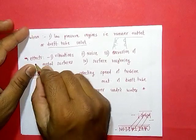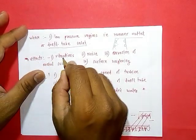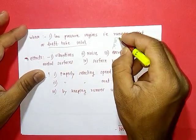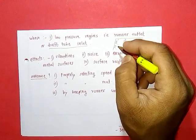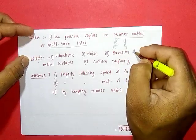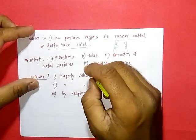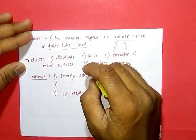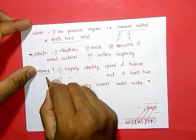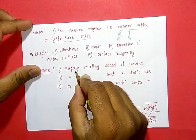The effects of cavitation are: first, vibrations — caused by the continuous hammering of water surrounding the vapor bubbles; second, noise; third, erosion of surfaces due to hammering of water; and fourth, surface roughening.